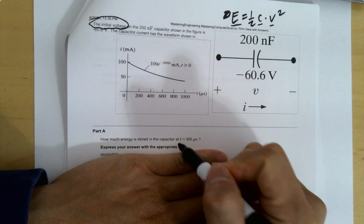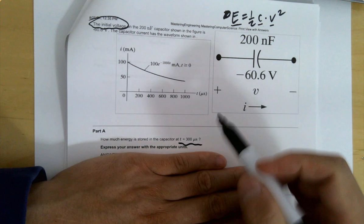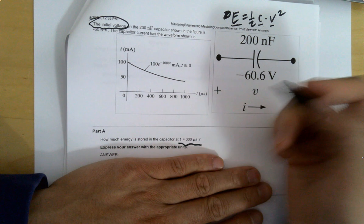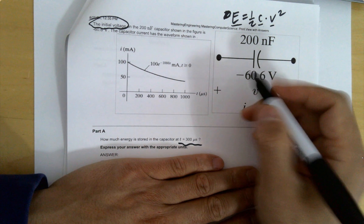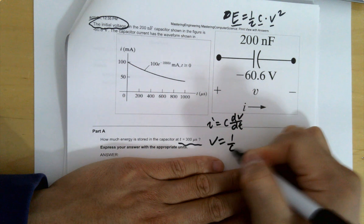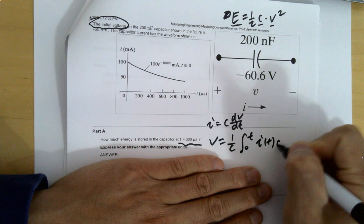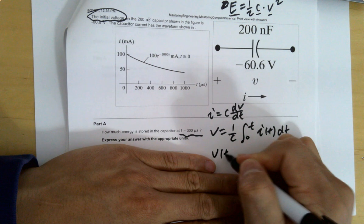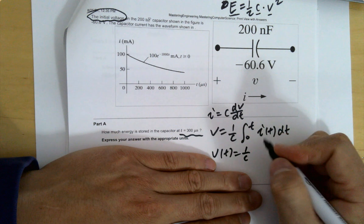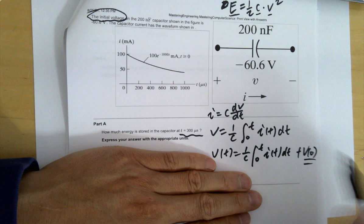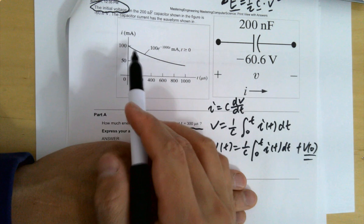If the question asks for energy at a specific time t, you need to find the voltage at that time. The capacitor model is i = C·dv/dt, so v(t) = (1/C)·∫i dt + V₀, where V₀ is the initial voltage — the accumulated charges plus the initial condition.